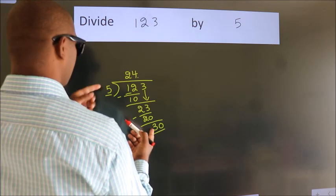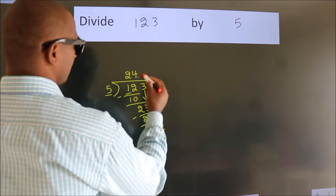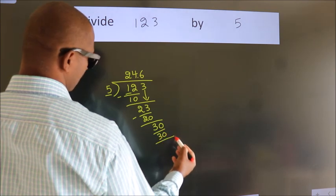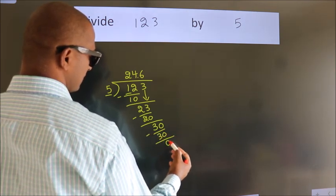When do we get 30 in the 5 table? 5 times 6 is 30. Now we subtract and get 0.